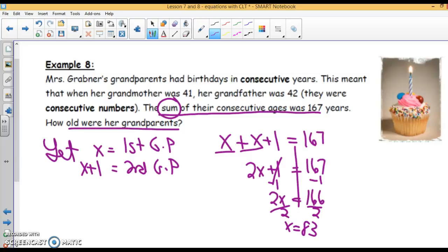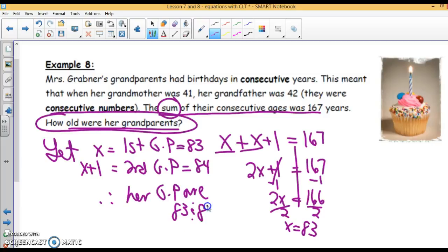We're not done. It says how old were her grandparents? Well, the first one is 83. The second one is 83 plus 1, 84. Therefore, her grandparents are 83 and 84. Now how would I check that? Well, I can add these two together and I will get 167.